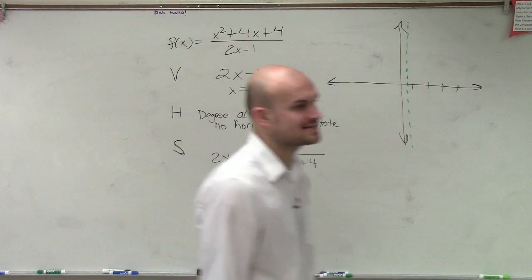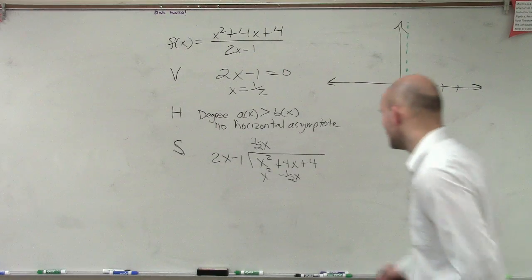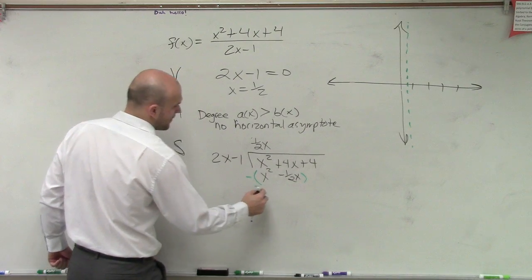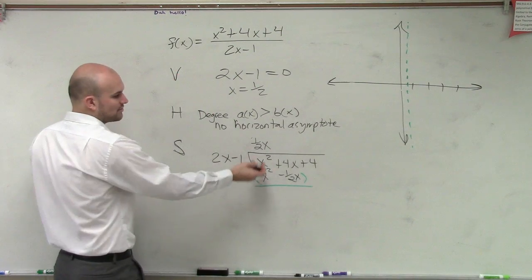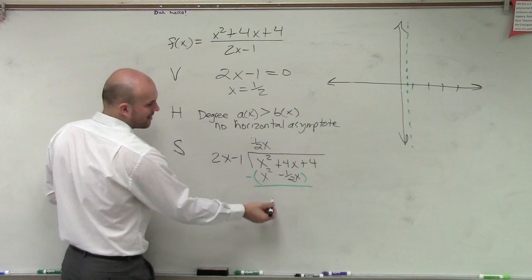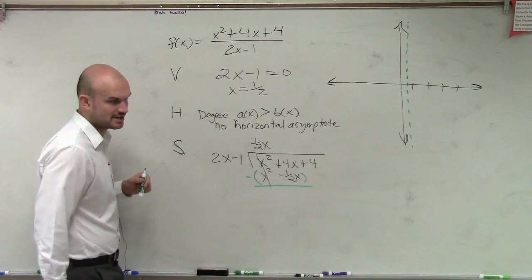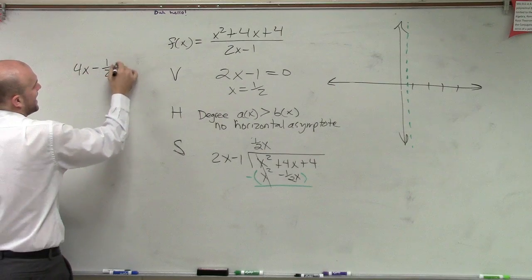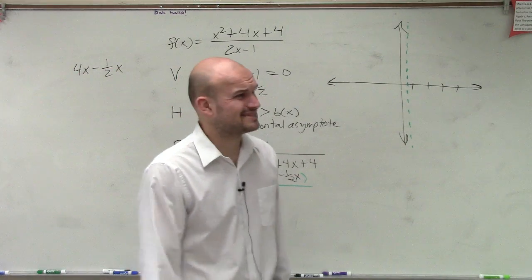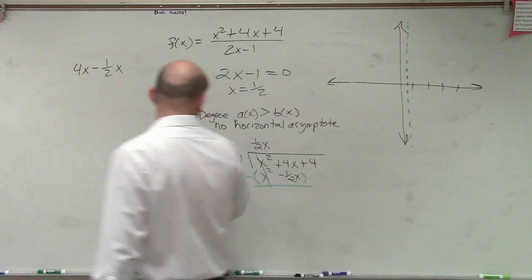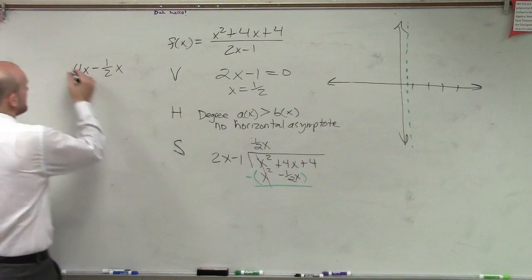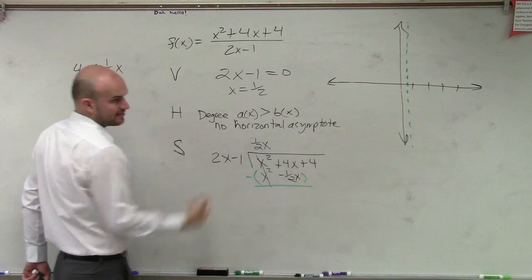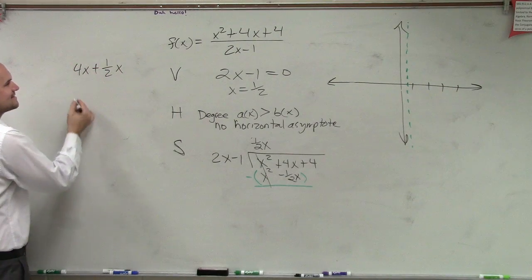Then I do 1 half times negative 1, which is going to be a negative 1 half x. Now, the next thing we do, if you guys remember, we have to subtract the whole row. So x squared minus x squared is just 0x squared. So that goes to 0. But now I have 4x minus 1 half x. You've got to have them be the same denominators. It's minus a negative. So now I need to add these up.